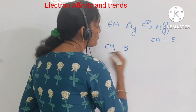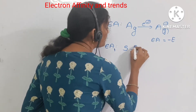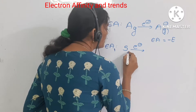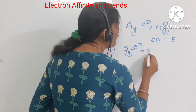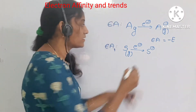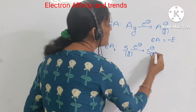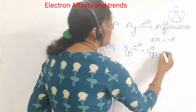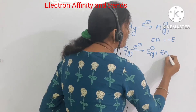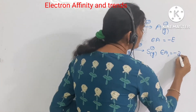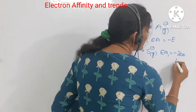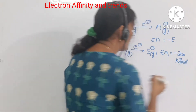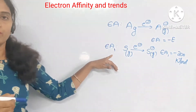I am going to take sulfur as an example. For sulfur, I am going to add one electron, so it will become S minus, a gaseous ion. This is the singly negatively charged ion. Here, Ea1 is equal to minus 200 kilojoules per mole. This is the Ea1.